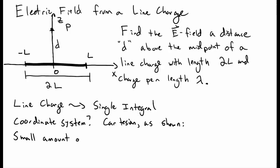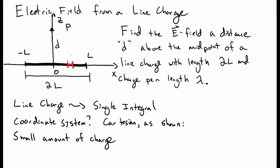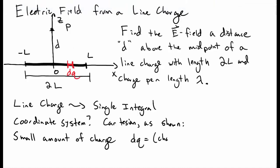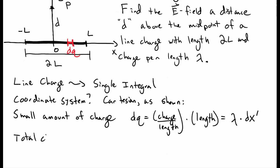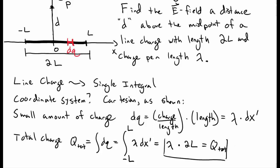We should consider what a small amount of charge dq is in terms of these coordinates. A small amount of charge dq is written as the charge per unit length times the length of that little bit, so lambda times dx prime, where we use prime for coordinates along the line charge. The total charge q_tot is the integral of lambda dx prime from negative L to L, which gives lambda times 2L.